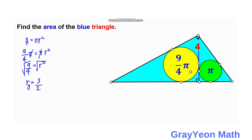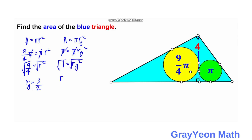Next we get the radius for the green circle. Area = πr_g². So π = πr_g². Canceling π gives r_g² = 1, and taking the square root of both sides, r_g = 1.